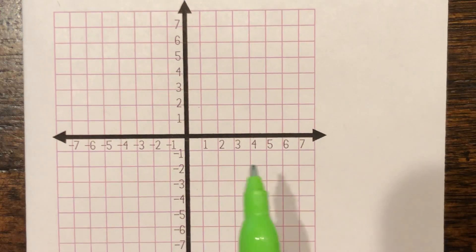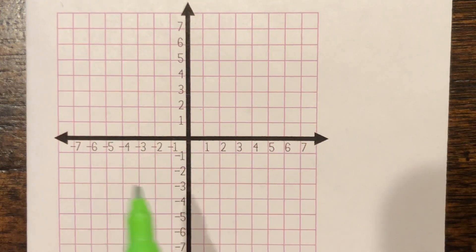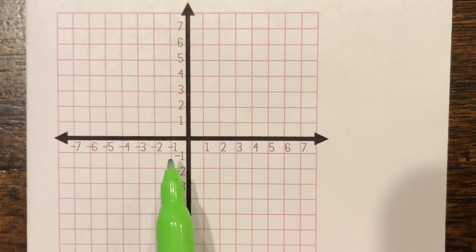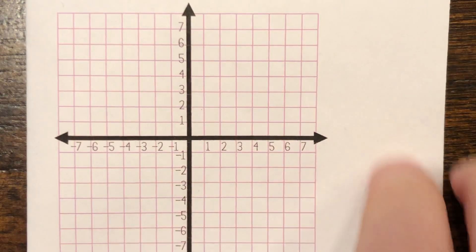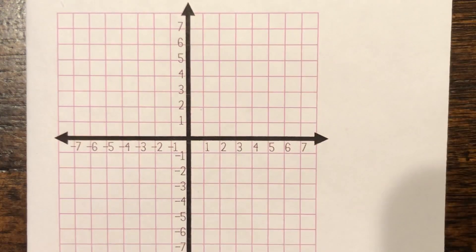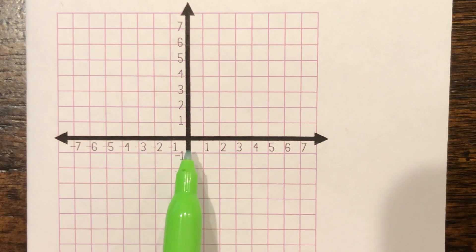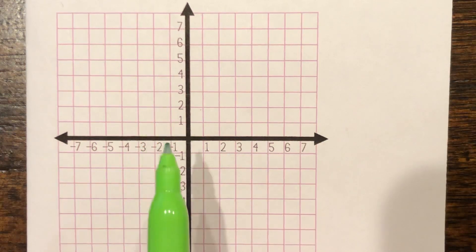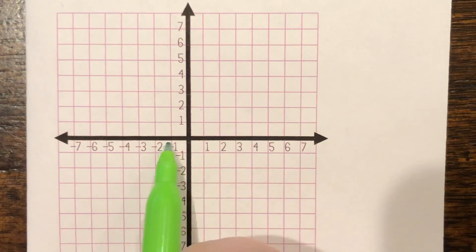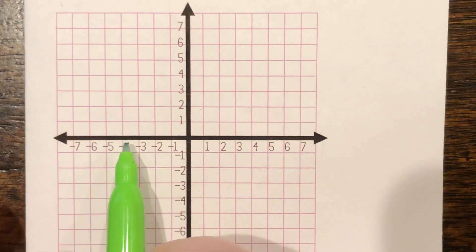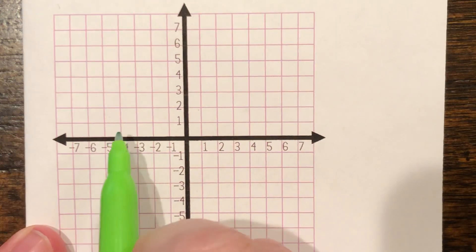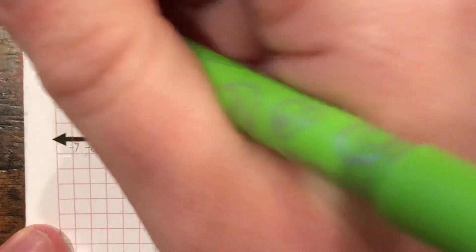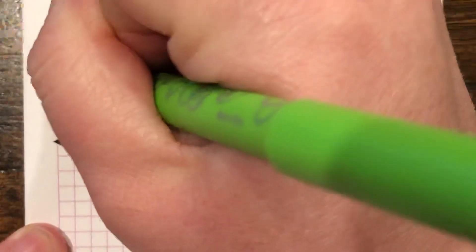First, we have negative 4, 4. And remember, on our coordinate plane, we need to walk before we take our elevator. So if we have negative 4, we're going to go to the left negative 4 because negative is left and down and positive is right and up. So we're going to go negative 4, then 4 positives. We're going to ride the elevator up 1, 2, 3, 4. Okay, and this is point A.